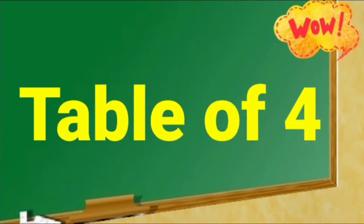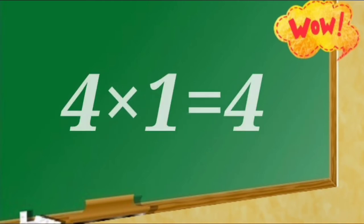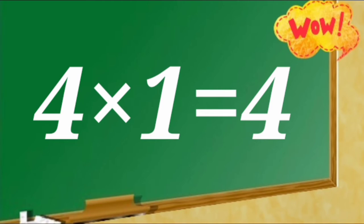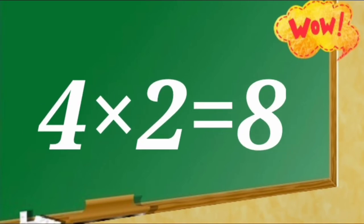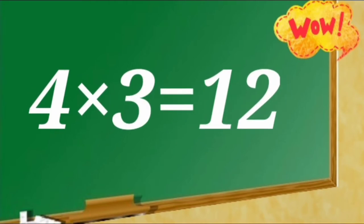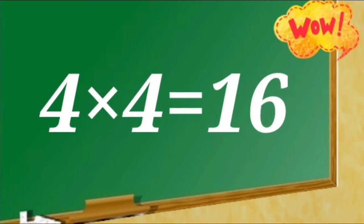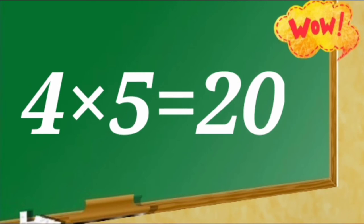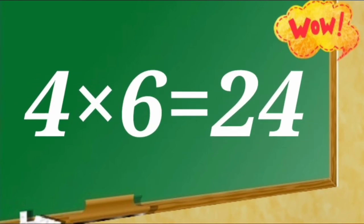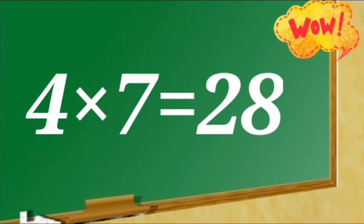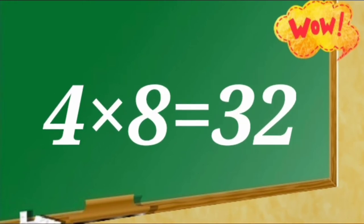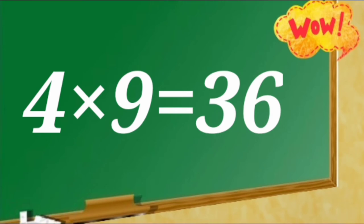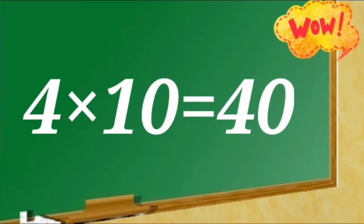Table of 4. 4 ones are 4, 4 twos are 8, 4 threes are 12, 4 fours are 16, 4 fives are 20, 4 sixes are 24, 4 sevens are 28, 4 eights are 32, 4 nines are 36, 4 tens are 40.